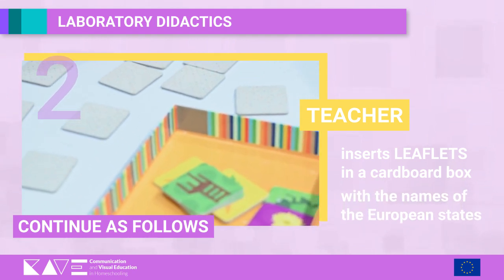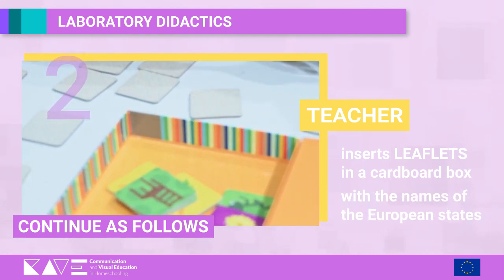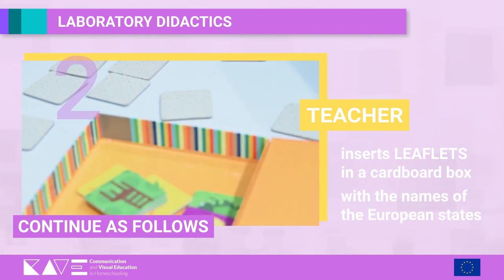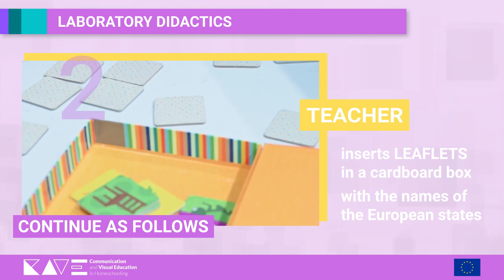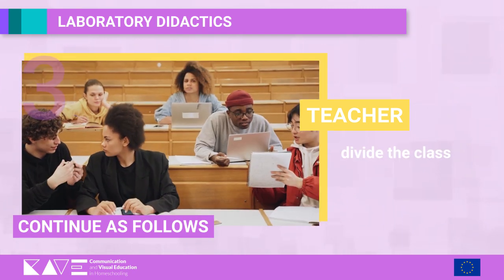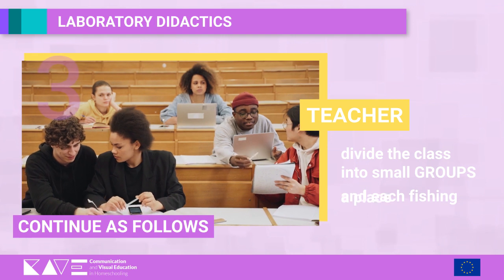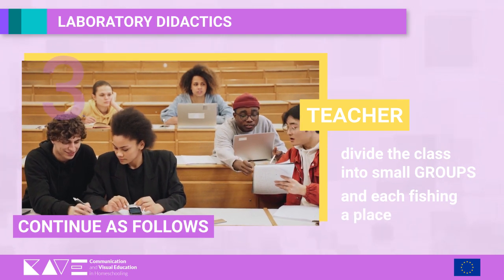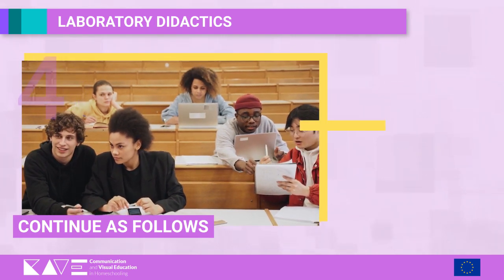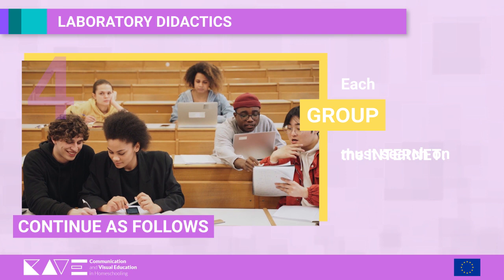Step two: the teacher inserts leaflets in a cardboard box with the names of the different European states or regions, depending on the class. Step three: divide the class into pairs or small groups, and each group draws a place.